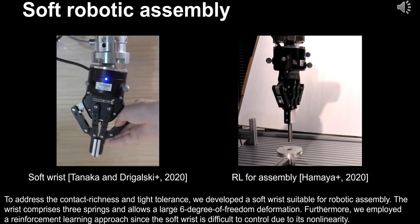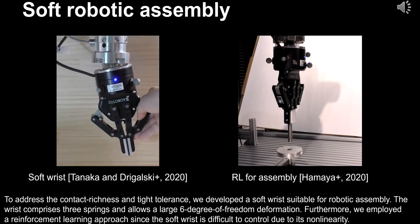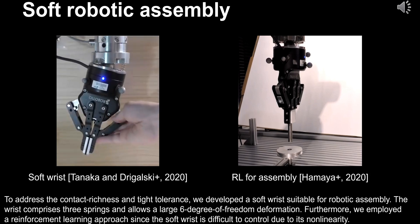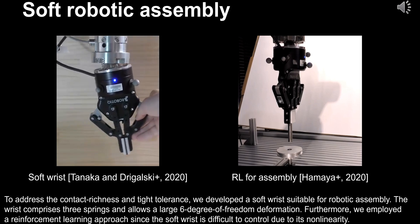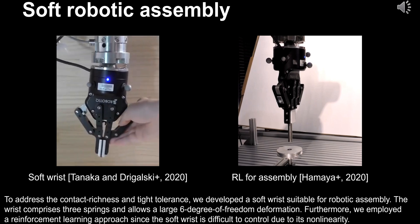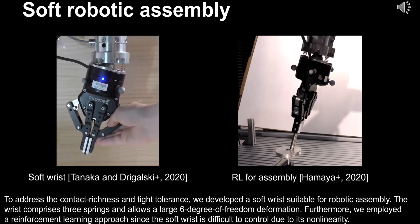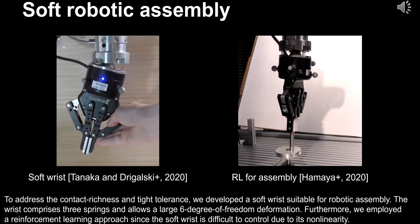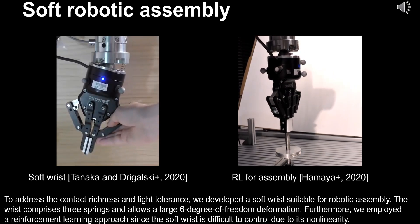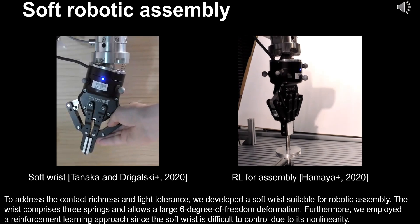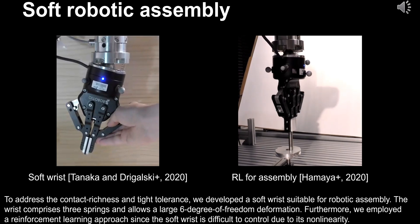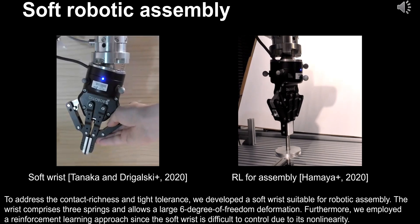The wrist comprises three springs and allows a large 6-degree-of-freedom deformation. Furthermore, we employed a reinforcement learning approach since the soft wrist is difficult to control due to its non-linearity.